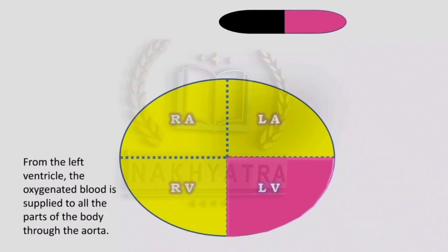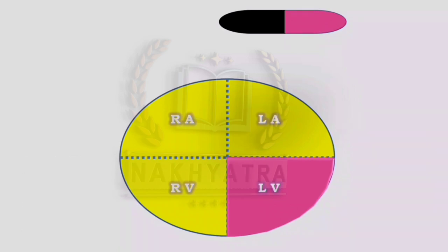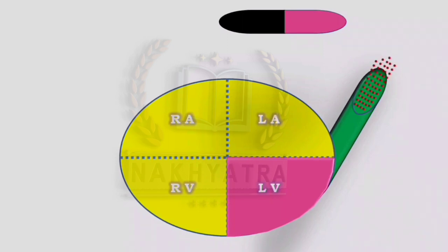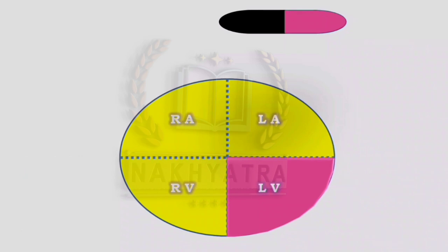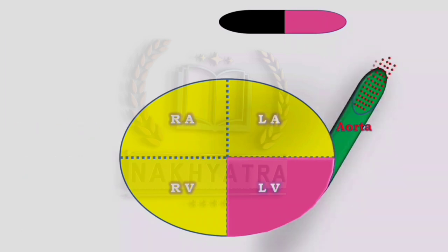From the left ventricle, the oxygenated blood is supplied to all parts of the body through the aorta.